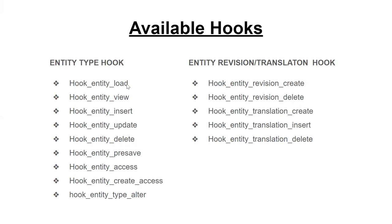Hook entity load is called whenever an entity is loaded, allowing you to alter the entity object. Hook entity view is called when you view an entity, such as visiting a node page. Hook entity insert is called only when a new node is created, not on updates. Hook entity update is called on edit actions. Hook entity create access lets you control whether a user has access to create a node.